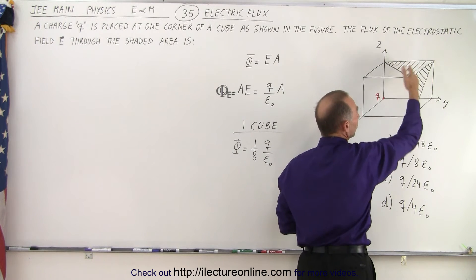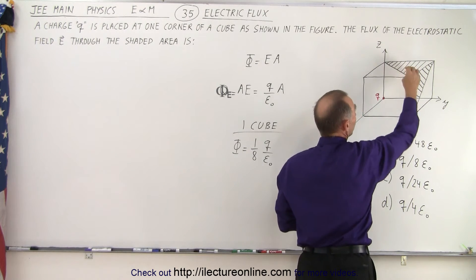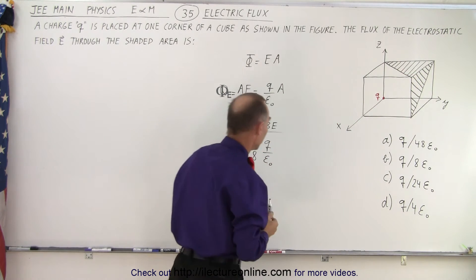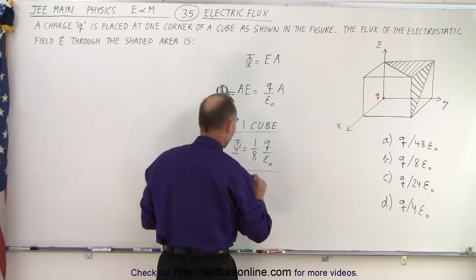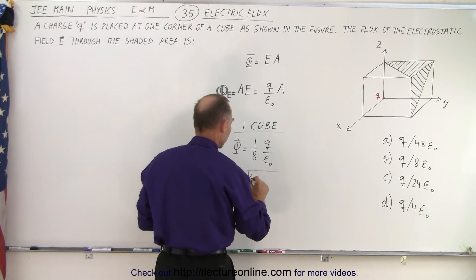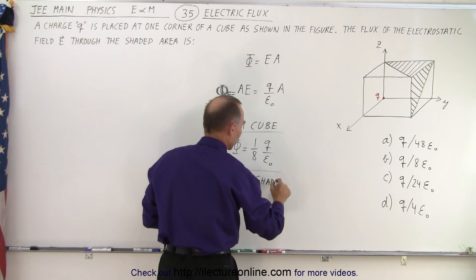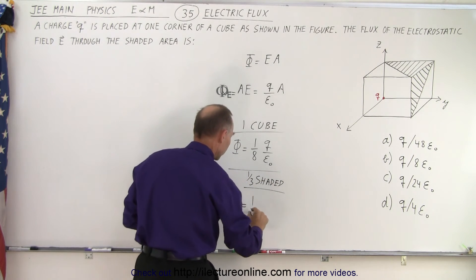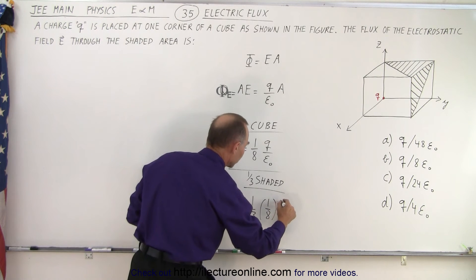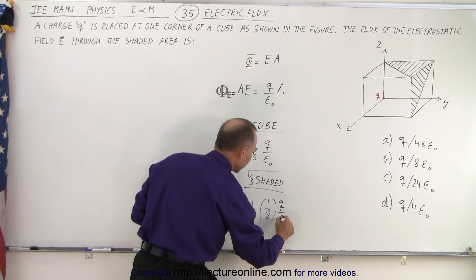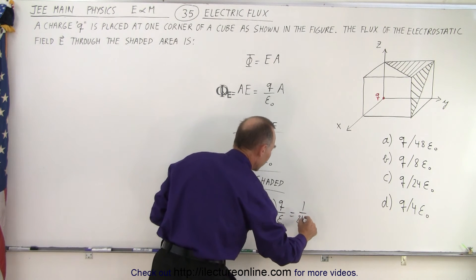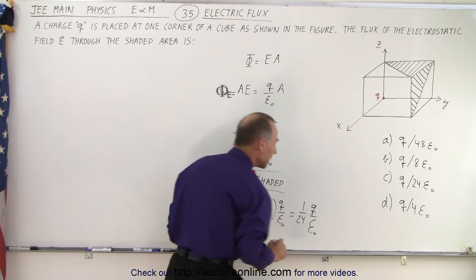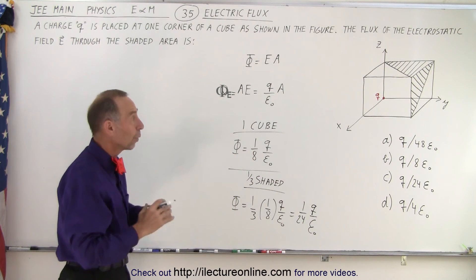So, only about one-third, or exactly one-third, of the flux would go to the shaded area. Two-thirds of the flux would go to the unshaded area. So, that means that we then have to multiply the fact that we have one-third of the area is shaded. We then take the flux as being one-third times one-eighth times Q over epsilon sub-naught. And so, that means that only one-twenty-fourth of all the flux will go through the shaded area of the one cube.